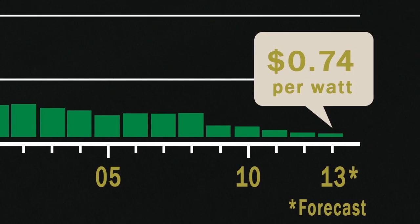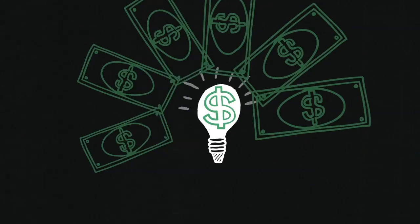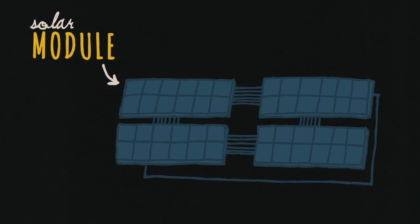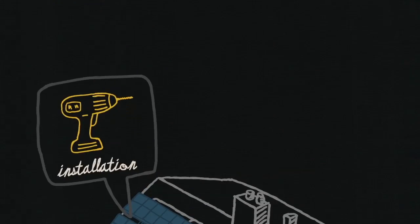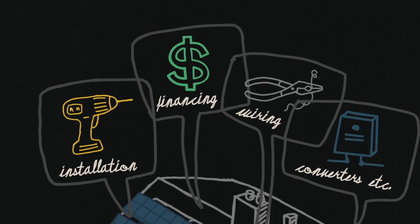Still, even if the cells get cheap, it still costs a lot to set up. Right now, cells are about 50% of the price of a module, and that's the thing that you actually stick on your roof. And then you still have the price of installation, financing, and all that other stuff.